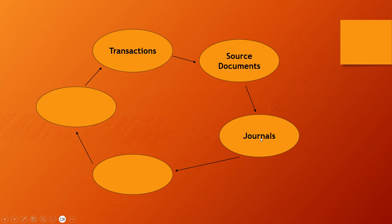From the journals we then post to the ledgers. The most common ledger that you all know is the general ledger, but we also have two others: the debtors ledger and the creditors ledger. Those are the three main ledgers we would deal with.